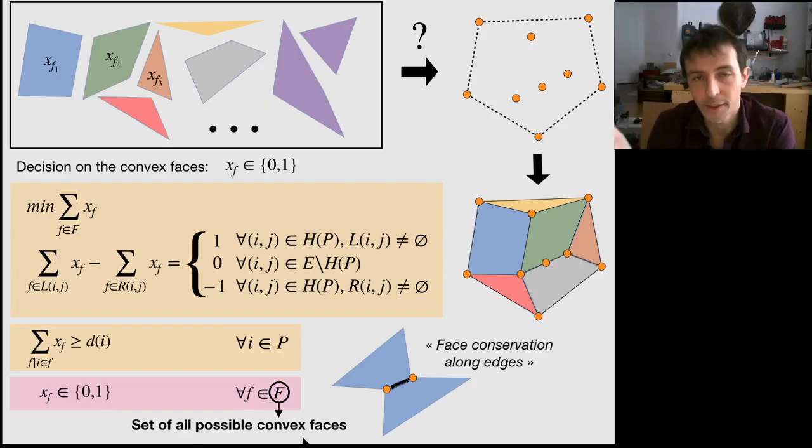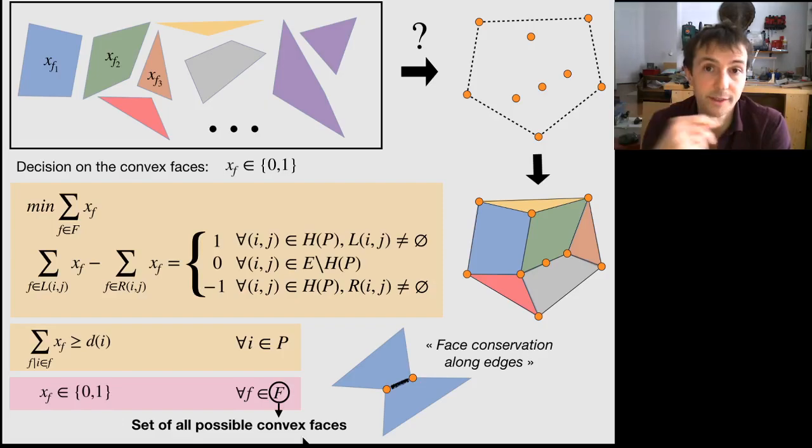So that in the worst case, there is actually an exponential number of these faces. Now, despite that fact, we will see that this model actually scales very well, much better than the edge model. So we will see that at the end.